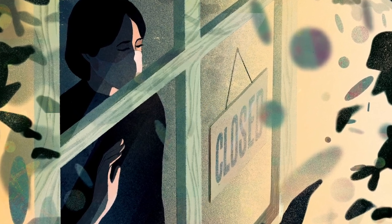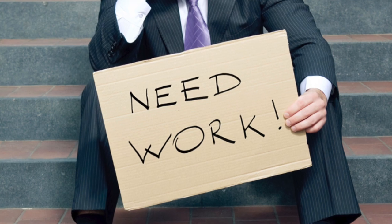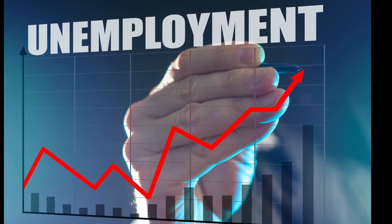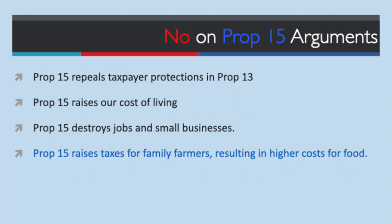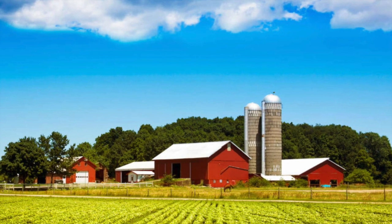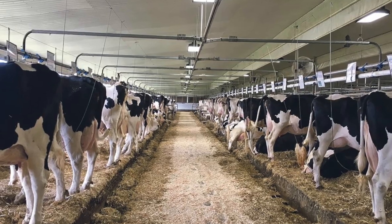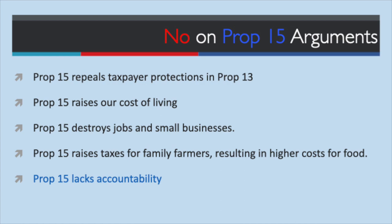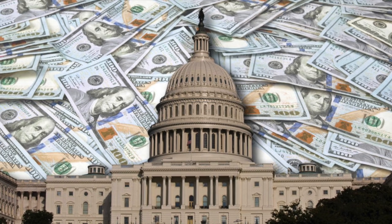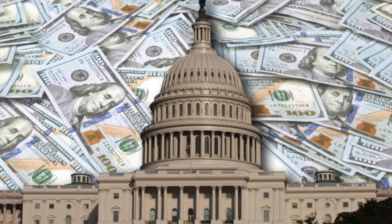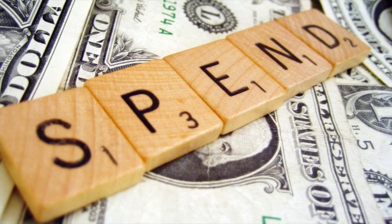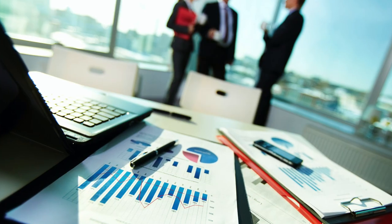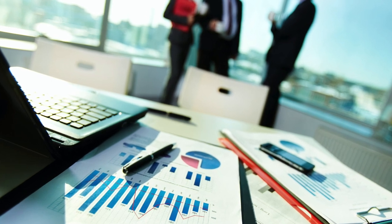Seven million Californians work for a small business, and millions are filing for unemployment. Prop 15 also raises taxes for family farmers, resulting in higher costs for food — it will raise property taxes on farming including barns, dairies, processing plants, and even fruit and nut trees. Prop 15 lacks accountability: it will cost taxpayers $1 billion a year in bureaucratic expenses, and politicians can spend the higher property tax revenue on anything they want, including administrative costs, outside consultants, and pay raises.